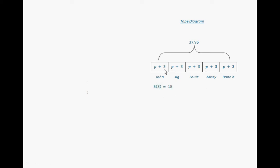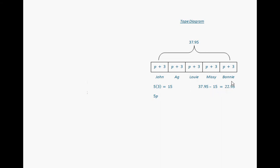We have five times three, which equals fifteen. Then we have five slices of pizza represented by 5P. If we know our total is $37.95, we take the $15 away and that leaves $22.95. Then we divide by the number of pieces of pizza, and that gives us $4.59 for each slice.